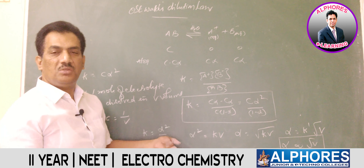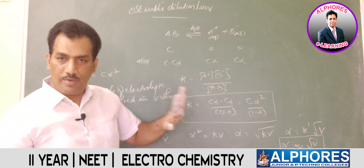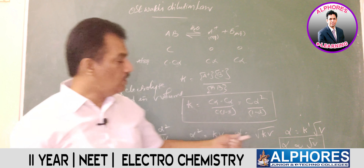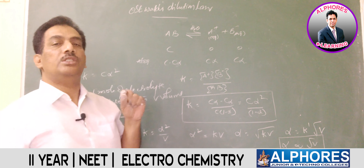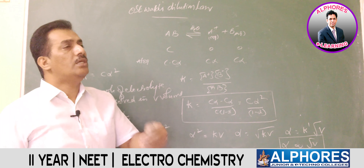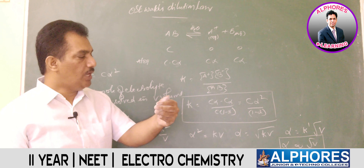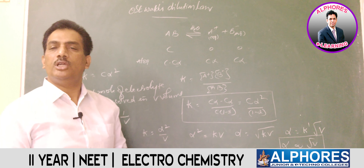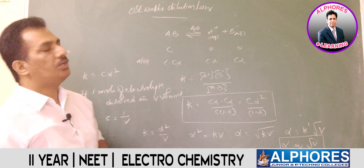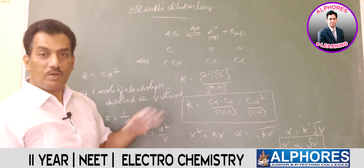Oswald's dilution law is applicable only for weak electrolytes. For strong electrolytes, the molecular concentration of the electrolyte becomes zero immediately, so there is no effect of dilution — Oswald's dilution law totally fails for strong electrolytes. The key relationship to remember: degree of dissociation is proportional to the square root of dilution.